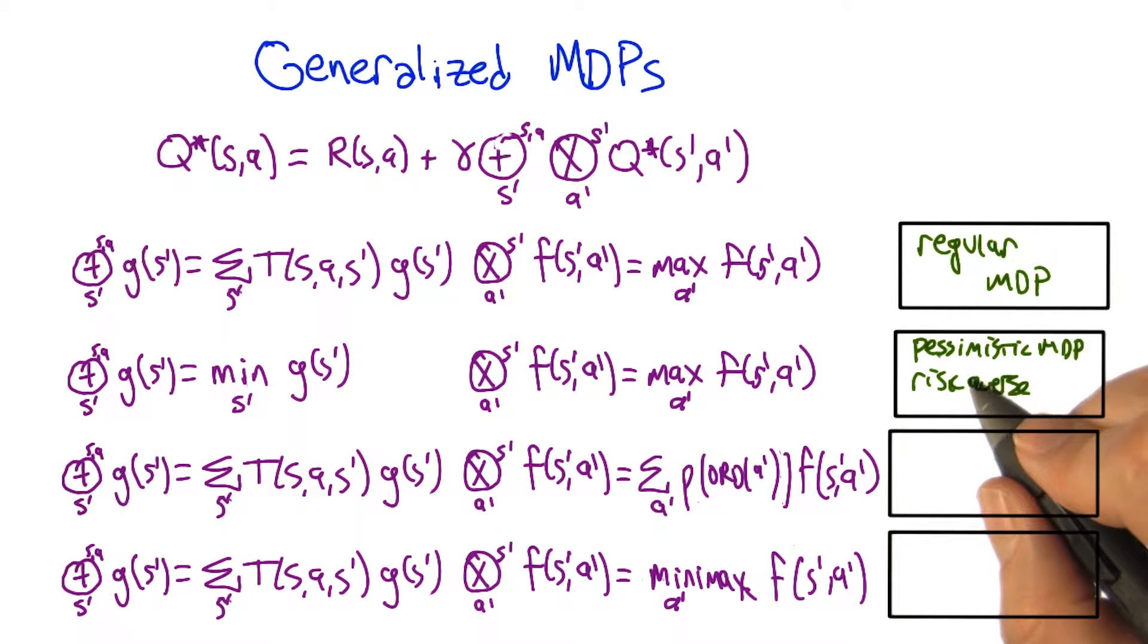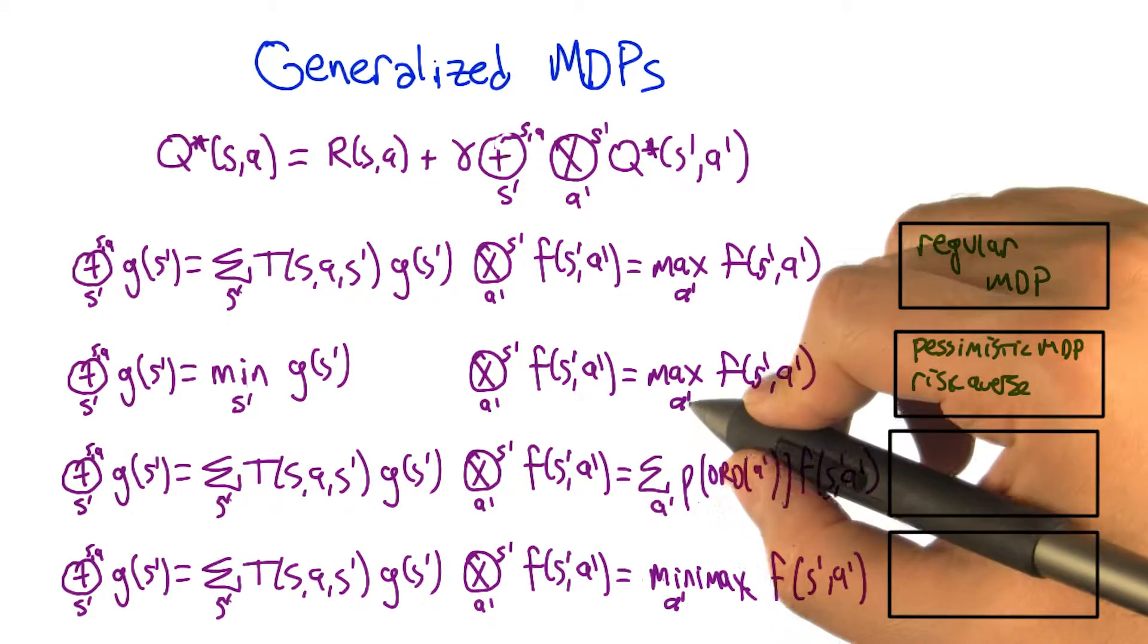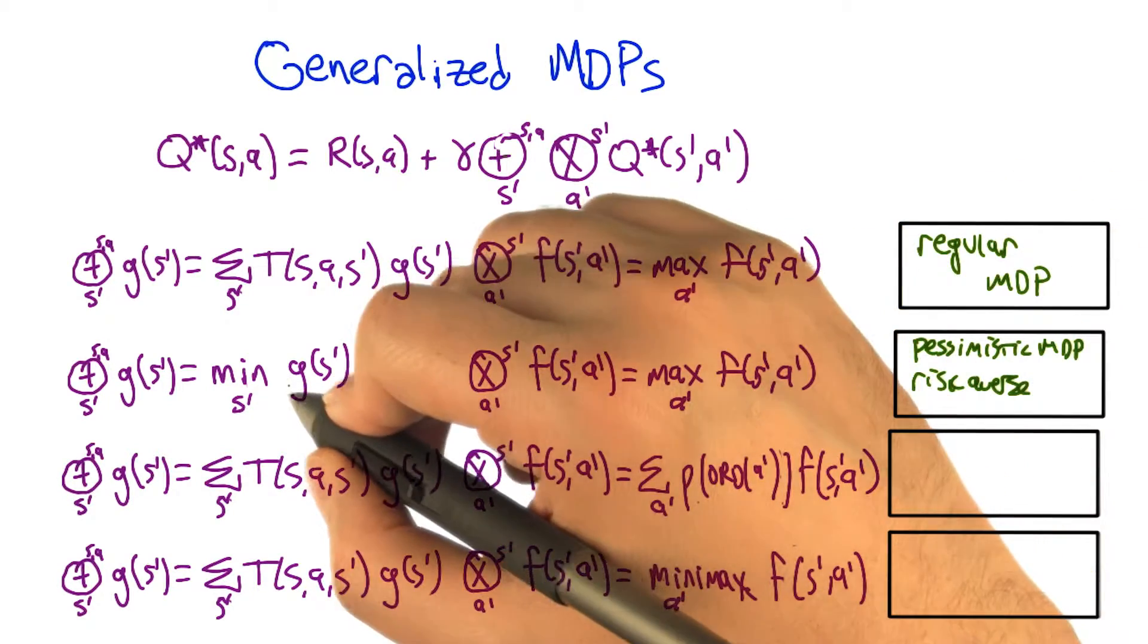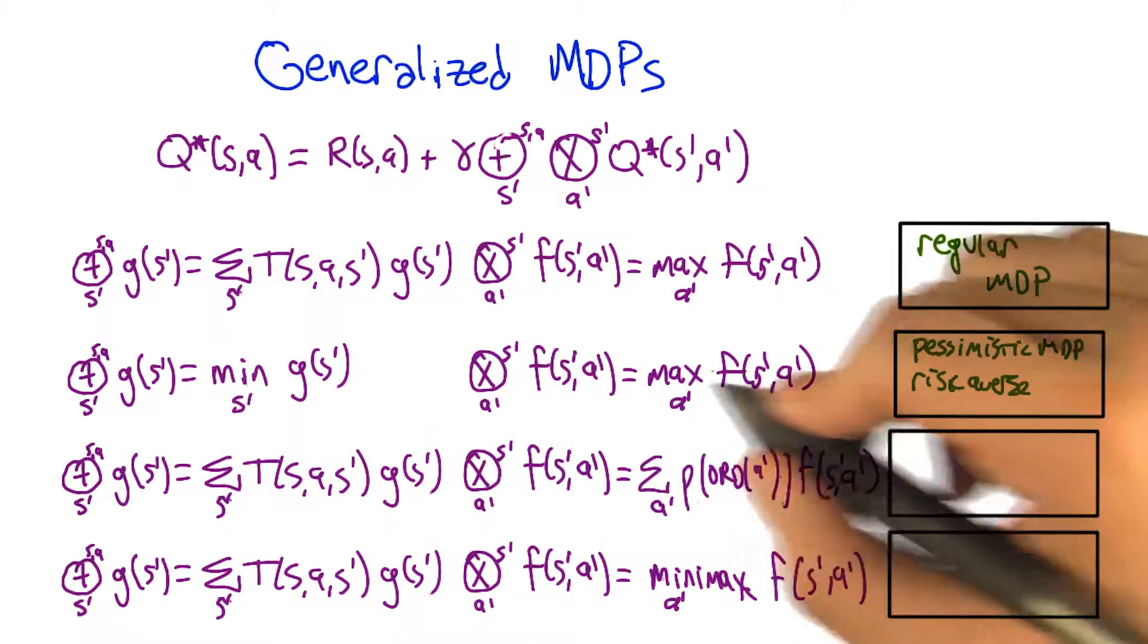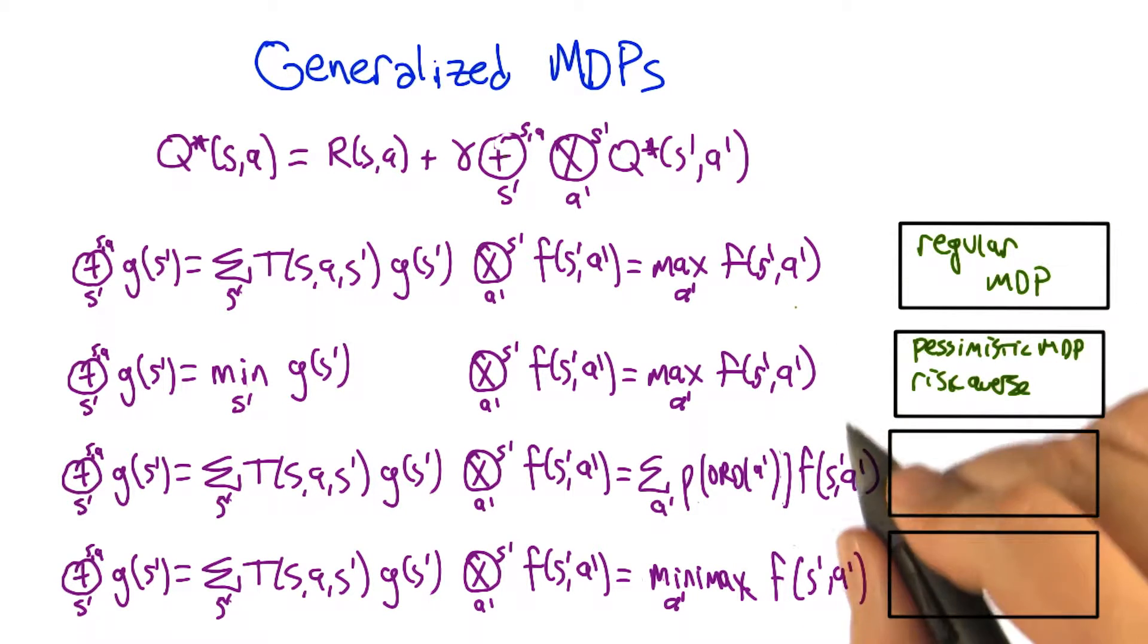But that means you would want to choose the action that would get you to the place where the least worst thing could happen. Yeah, that's right. Right, so us, the agent, the one who's doing the deciding, is trying to be risk-averse relative to what the environment might do to it. Right, sure. That makes perfect sense. Okay, so risk-averse is not a bad description. Good.